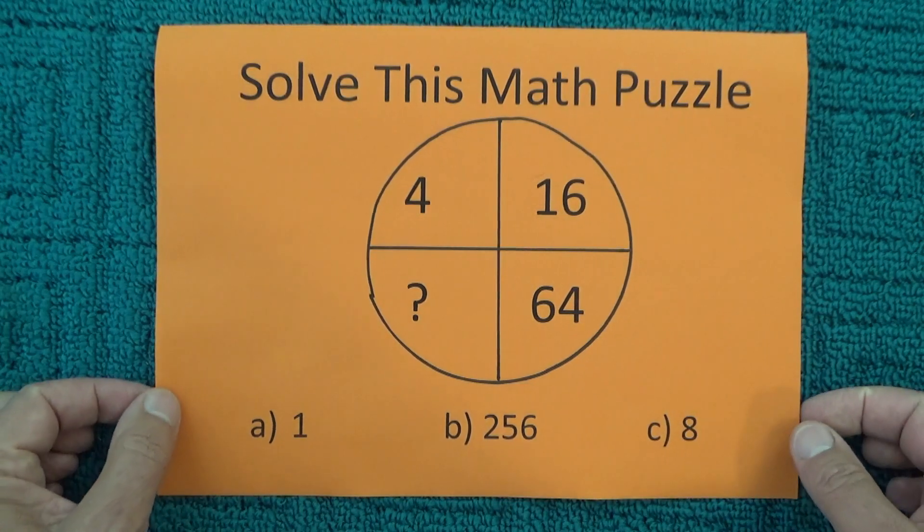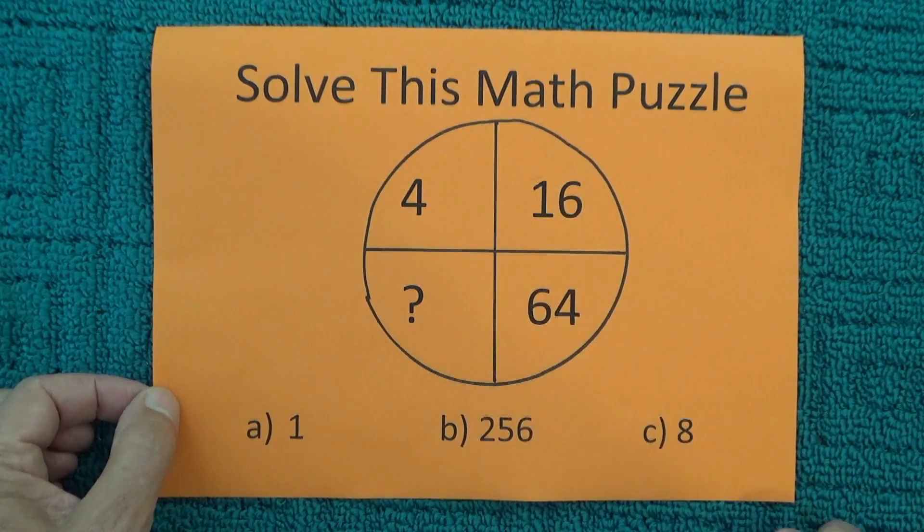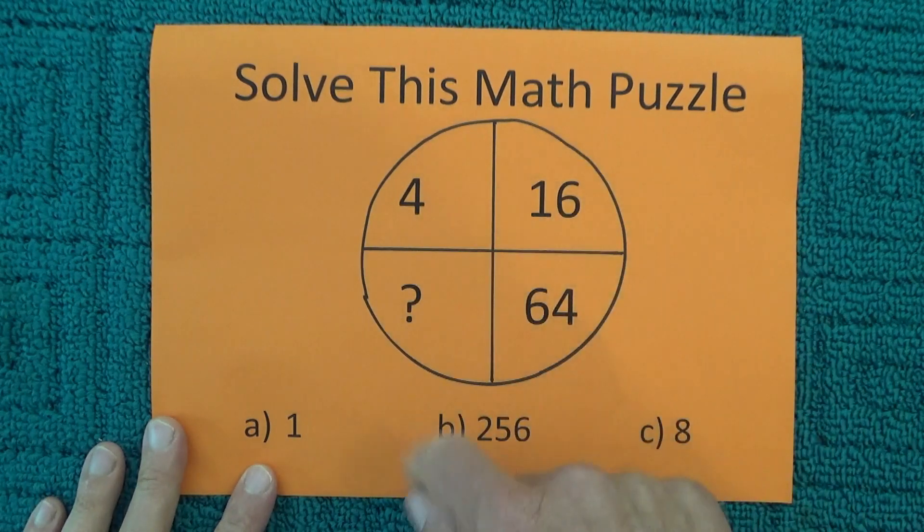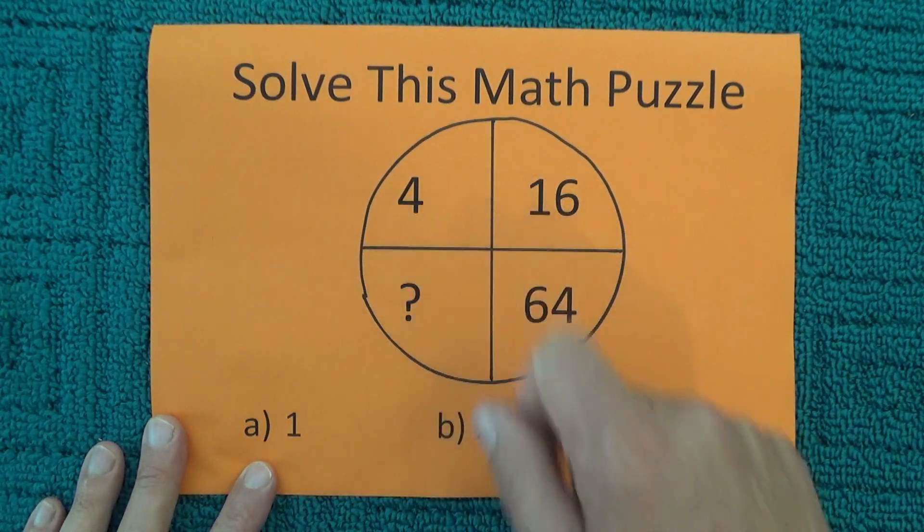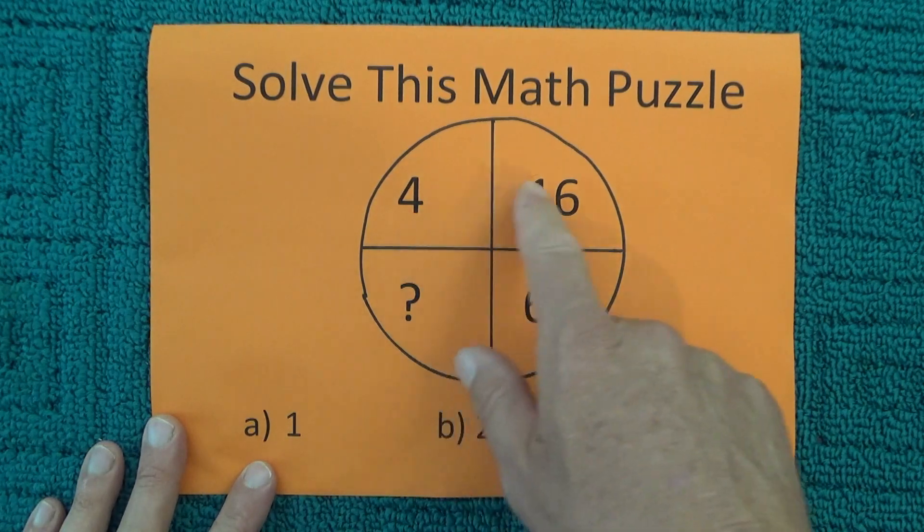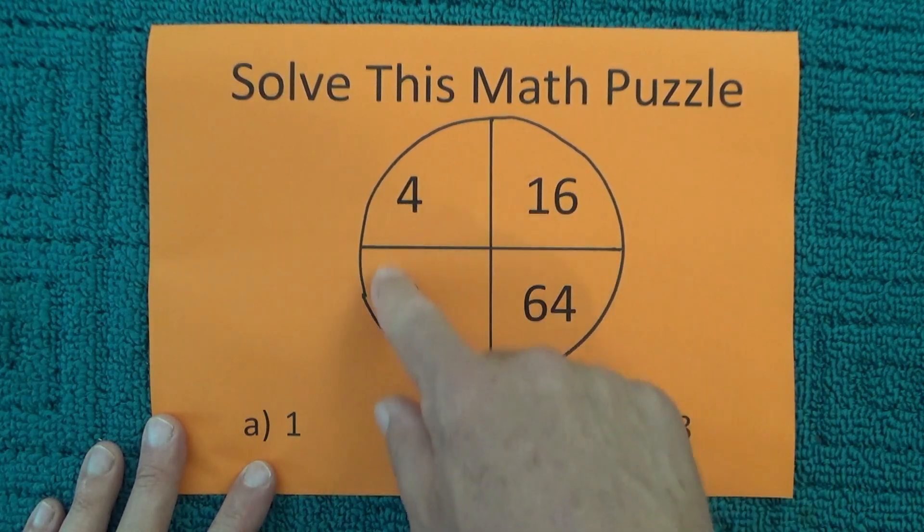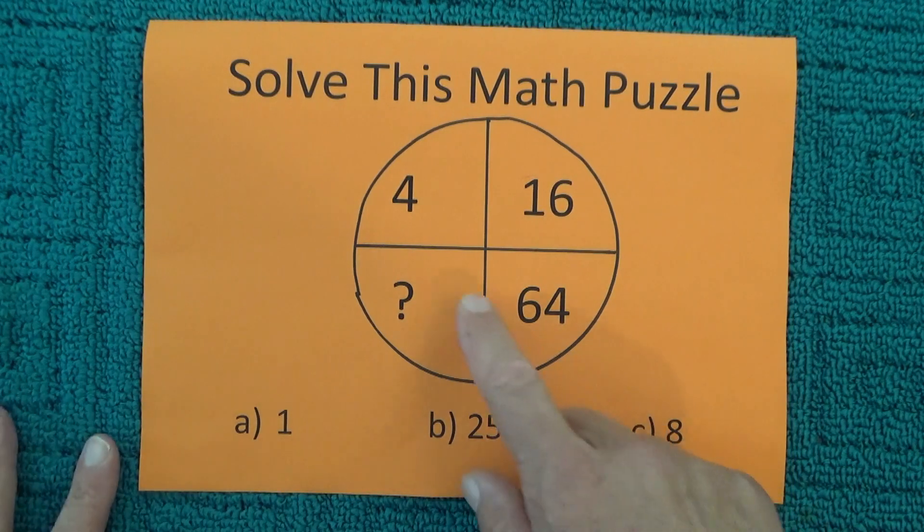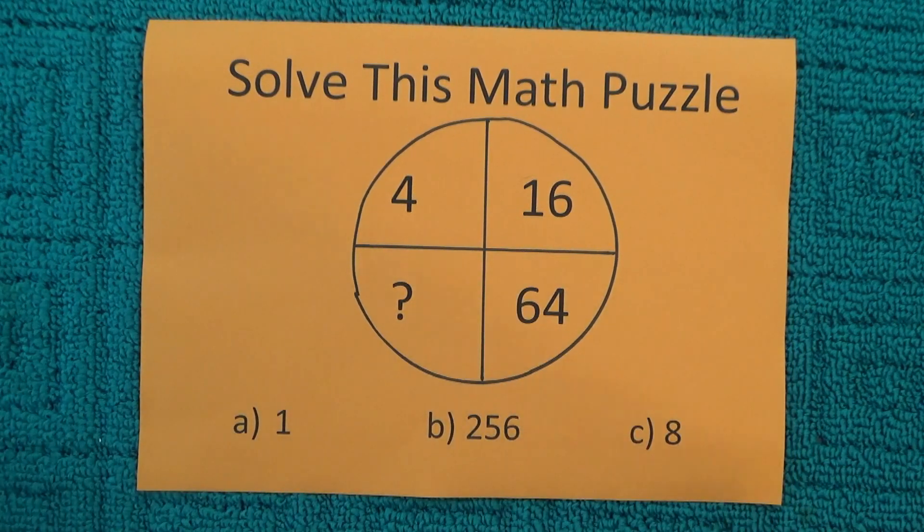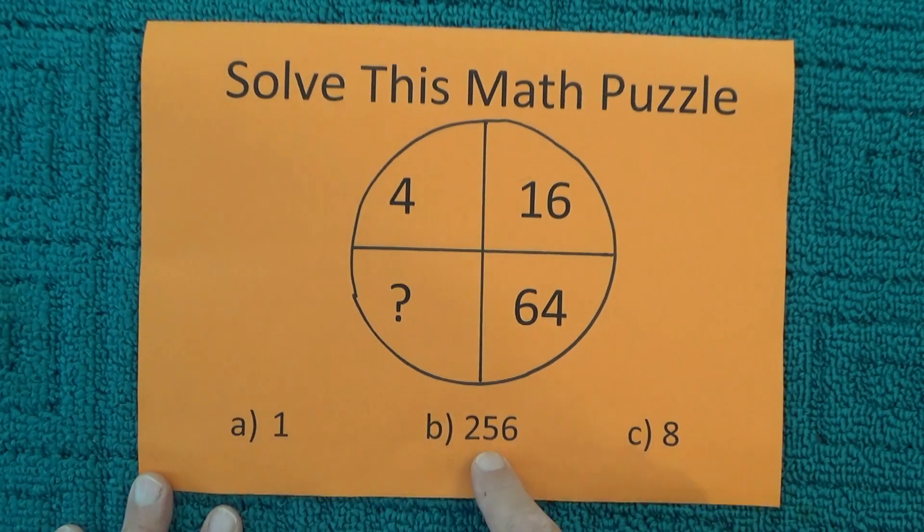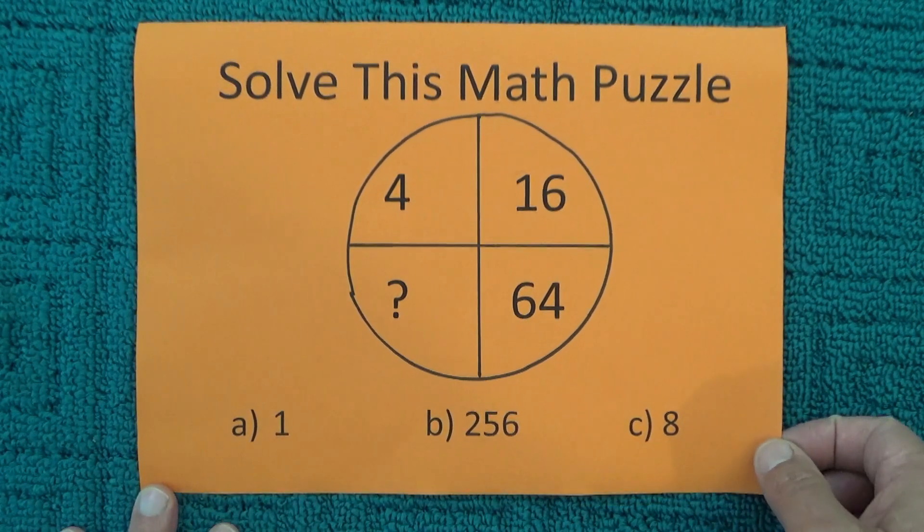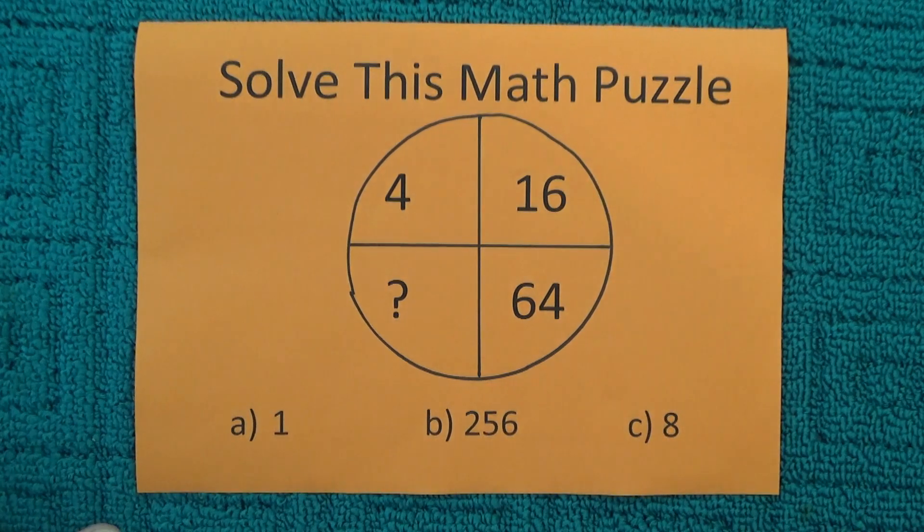Hello, today I'd like to share with you this great math puzzle. This puzzle has a circle with four quadrants, four sections, and we've got numbers in three sections. We need to find out what number is represented by the question mark, and we're given three possible answers at the bottom.